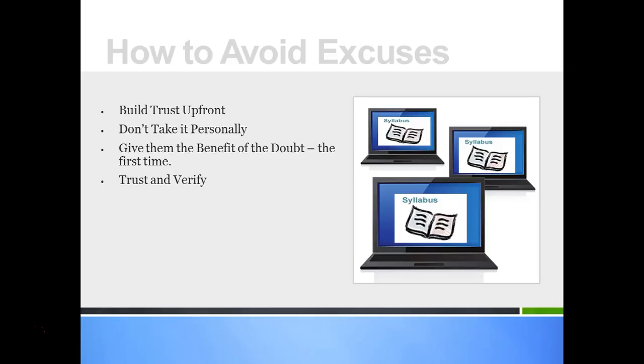Finally, trust and verify. Tell them you trust them, but you would like to see some sort of verification of the excuse. For example, was the roommate really sick and taken to the emergency room? Then there should be some sort of paperwork on that.